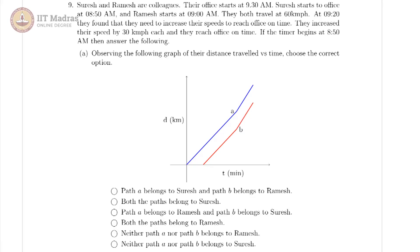For our ninth problem, we have two colleagues Ramesh and Suresh and their office starts at 9:30 a.m. Suresh starts at 8:50, Ramesh starts at 9:00, and they both go at equal speed. At 9:20, they decide to increase their speeds in order to reach their office on time, which is at 9:30. This increase in speed was 30 kilometers per hour each and they managed to reach the office on time.